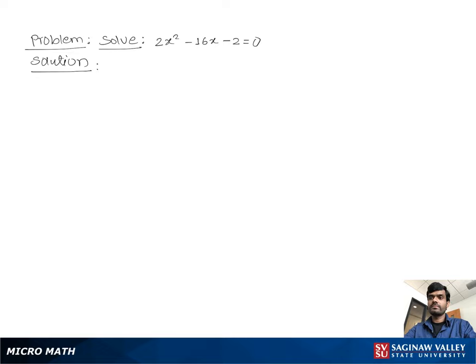Solve 2x² - 16x - 2 = 0. Let's write the problem again: 2x² - 16x - 2 = 0.